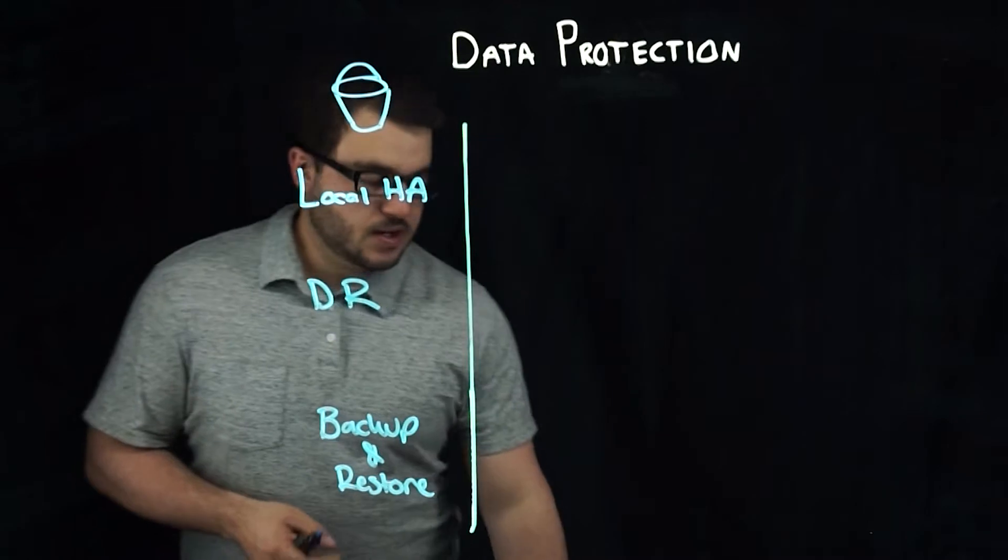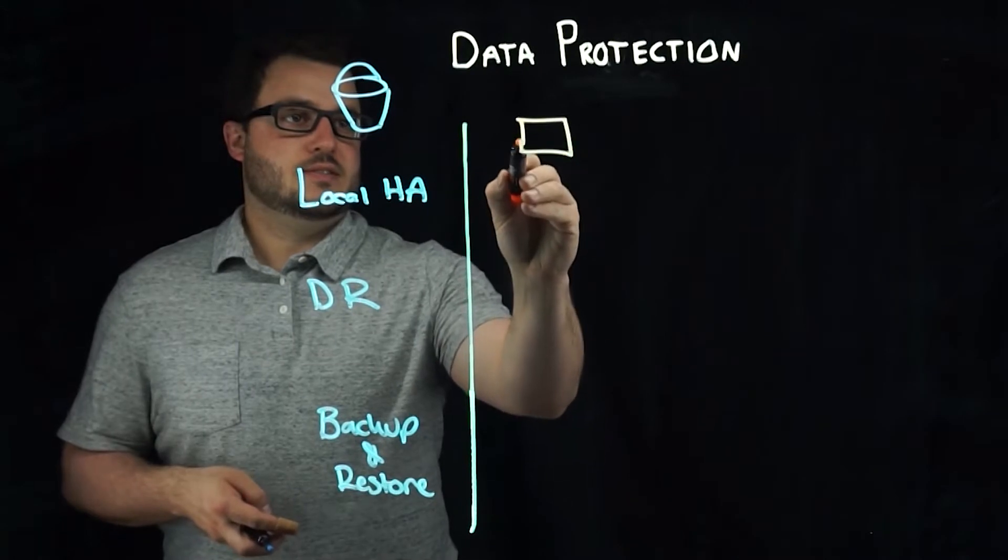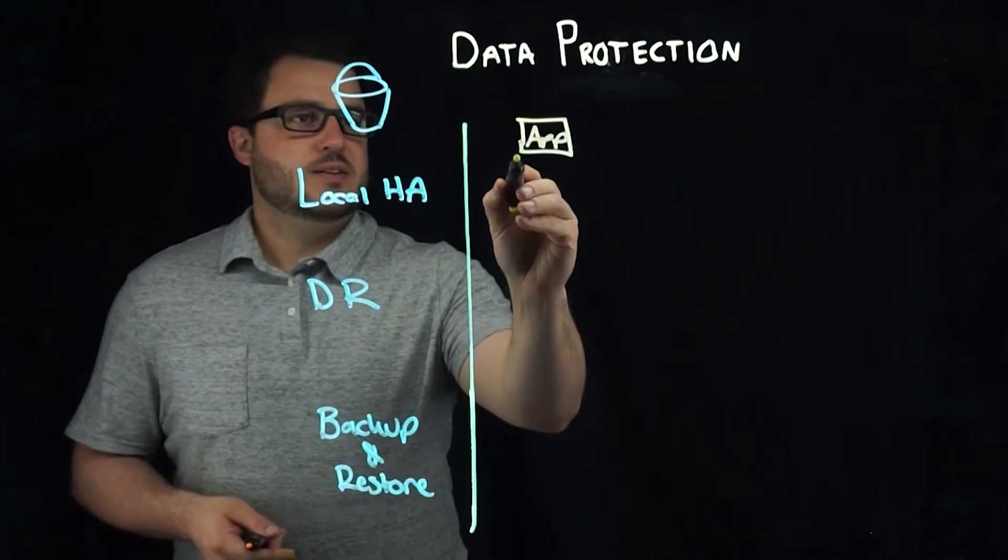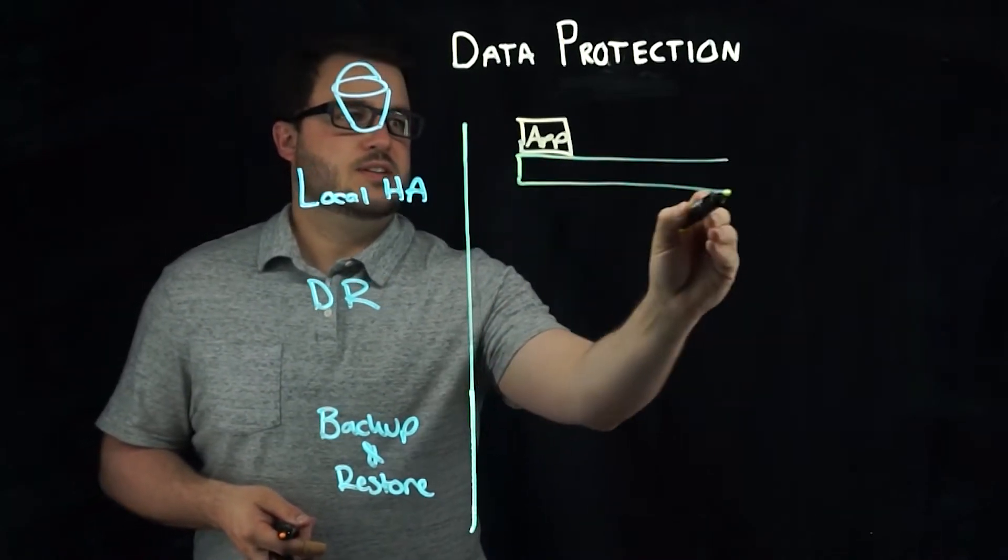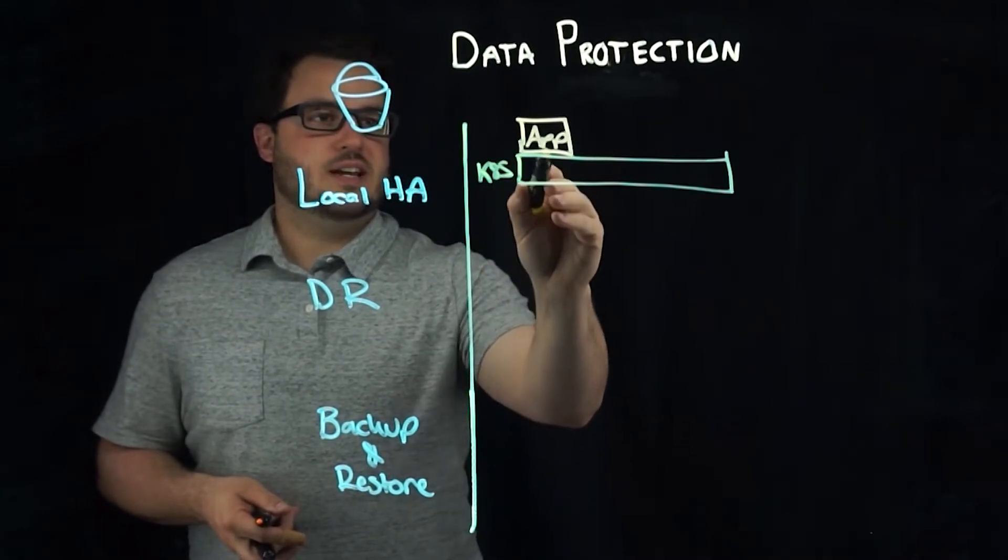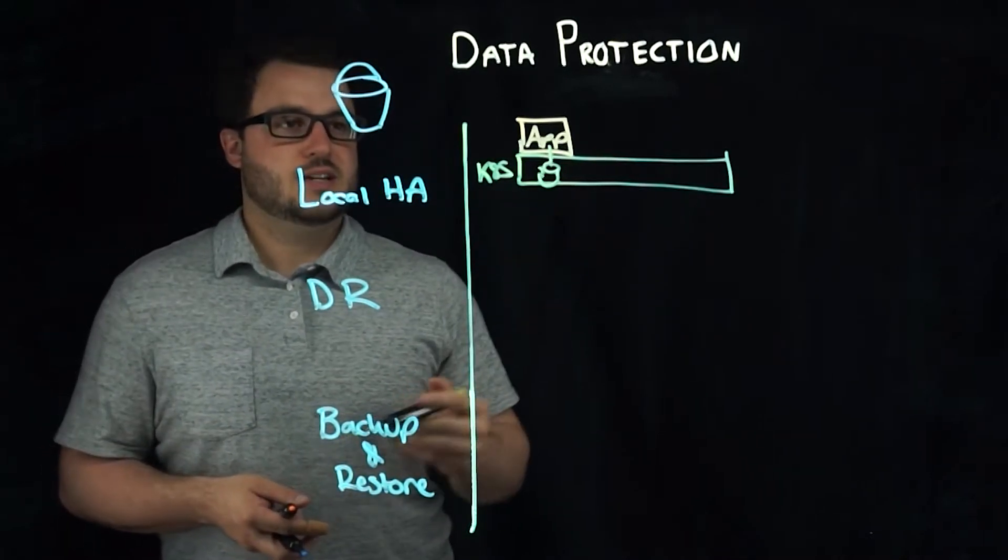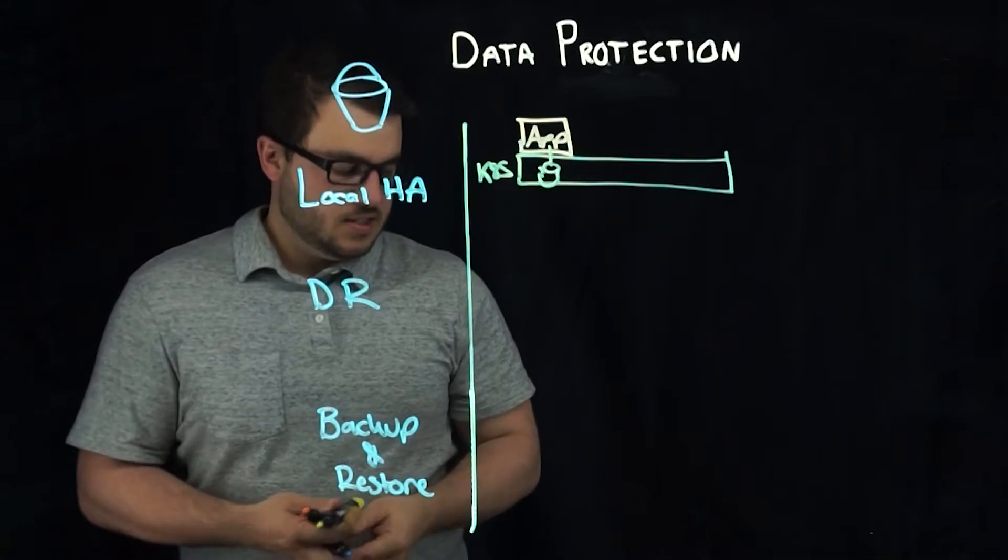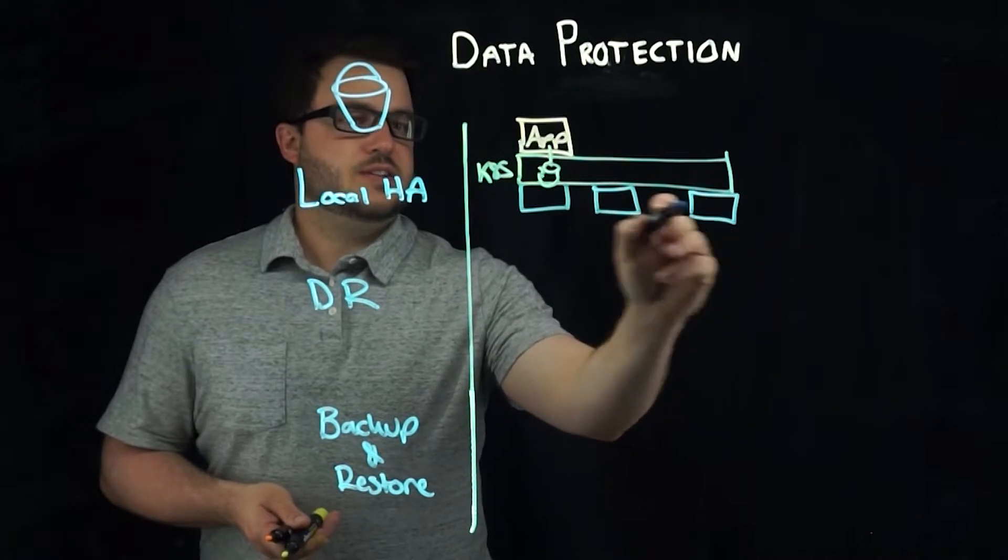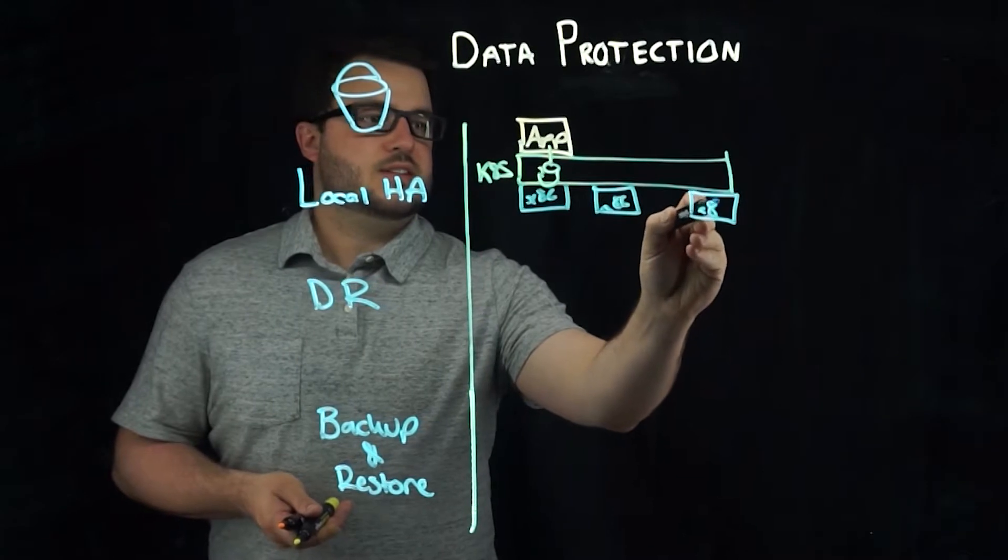For local HA, so local high availability, you would have an application. That application would be sitting on some level of infrastructure. In this case it's Kubernetes, and that Kubernetes has a persistent volume claim for that application. And of course there are a number of different nodes underneath here. Let's say that they're just x86.